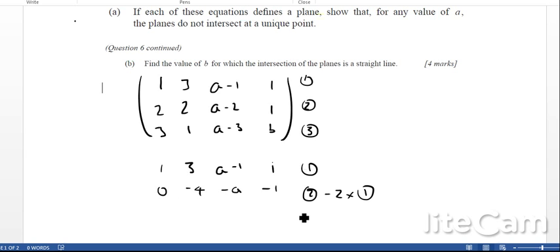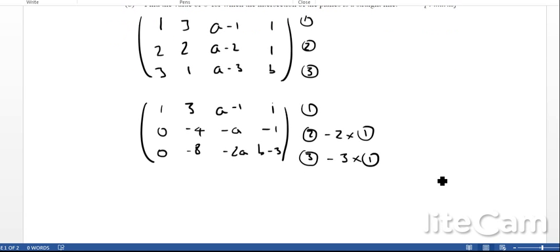In the last one, equation 3 take away 3 times equation 1, and this is going to give me 0, minus 8, minus 2a, and minus 3. This is my new matrix that I've got. As you can see, I've got 0 here and a 0 here.